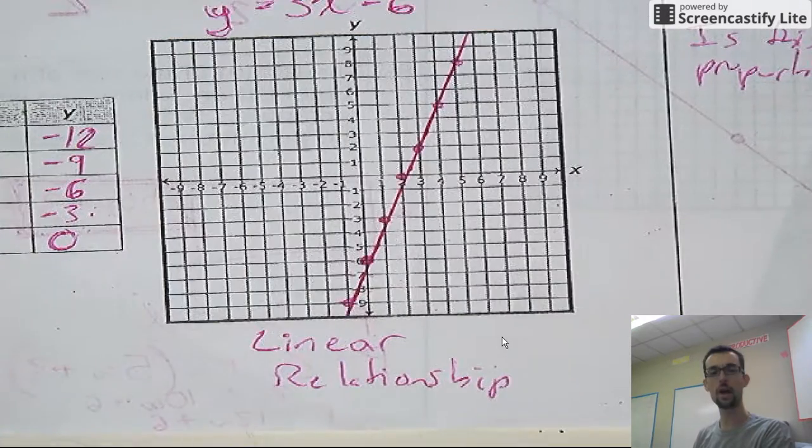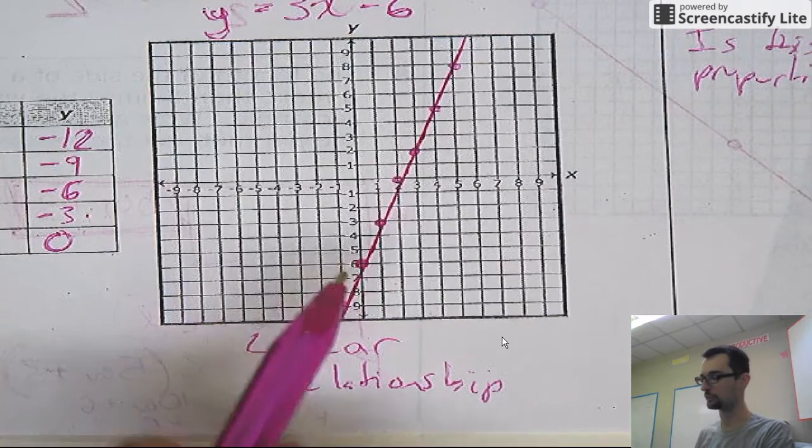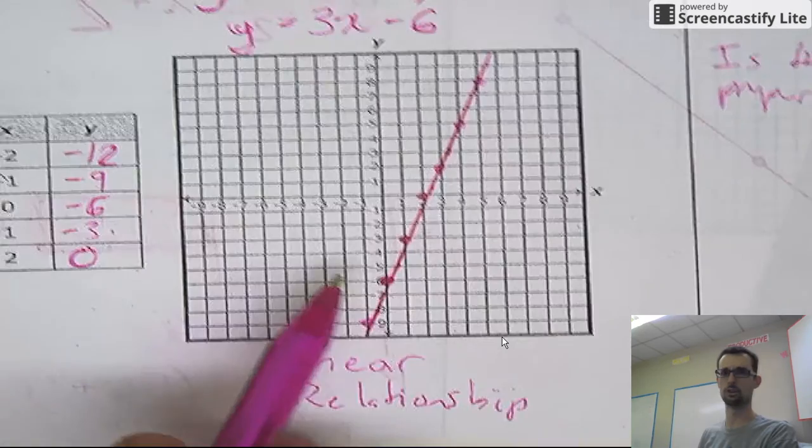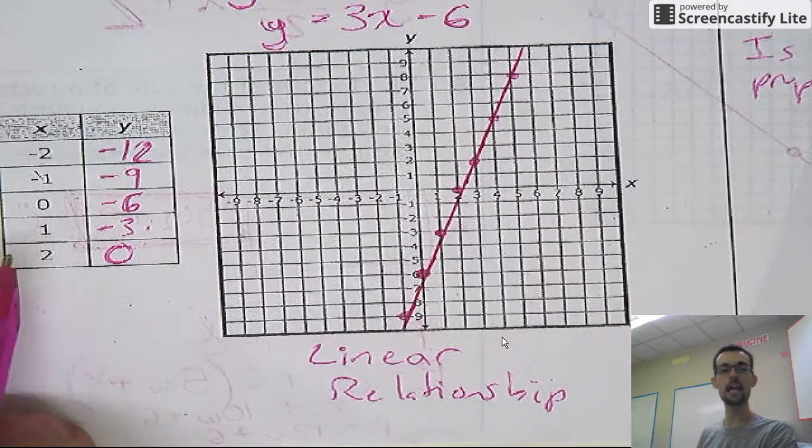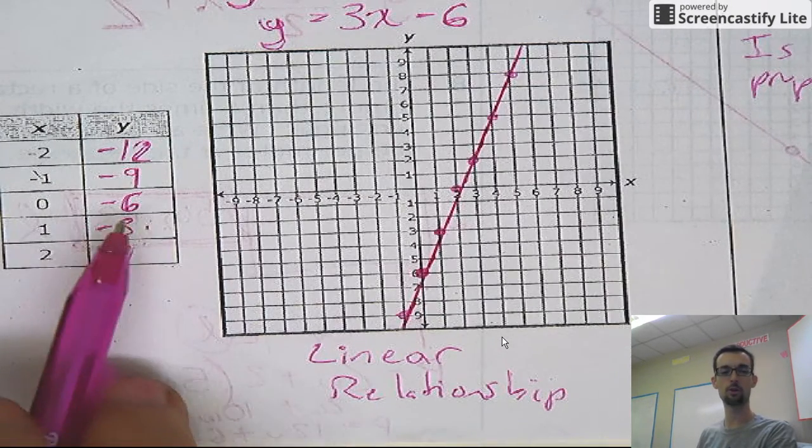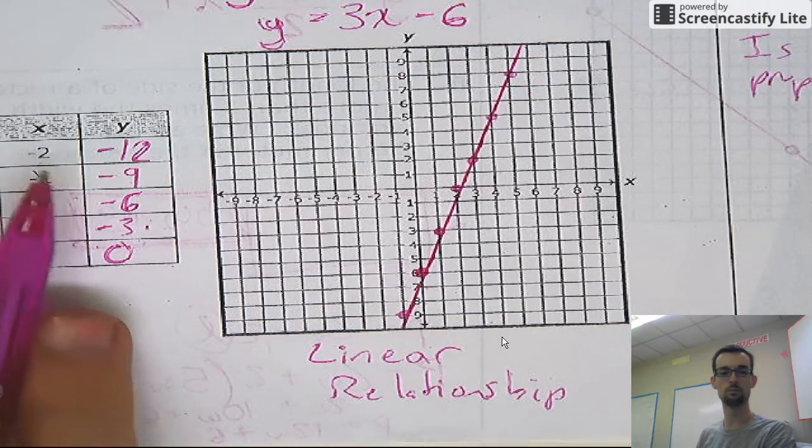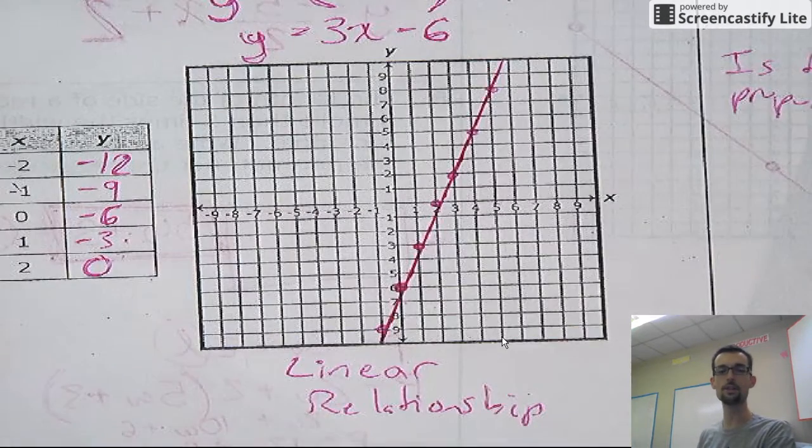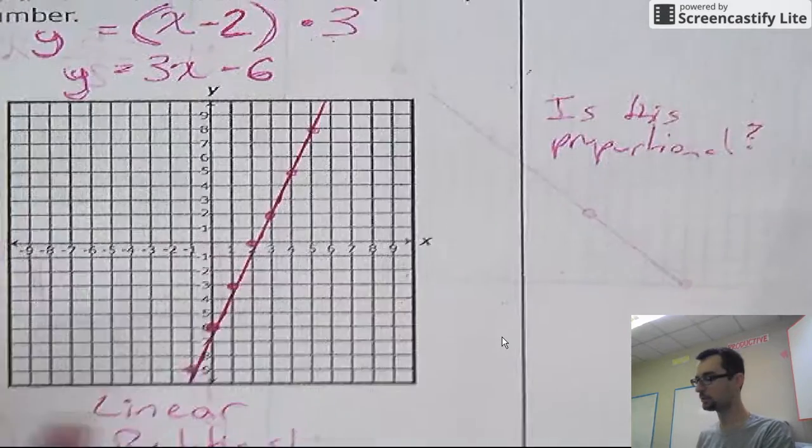As a hint, there's two ways of telling. You can either tell directly from the graph. Actually, there's three ways. You can tell from the table whether all your ratios are the same on every row. Or you can tell from the equation. All right. So, is this proportional?